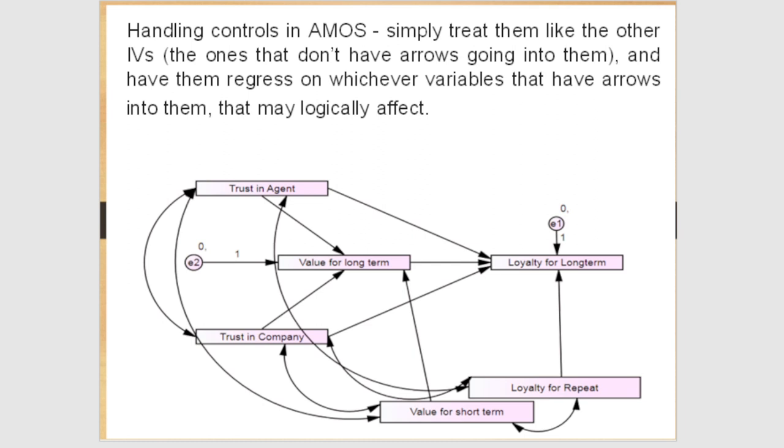In this case, you can see that trust in agent and trust in company are acting as independent variables, whereas loyalty for repeat will act as a control for loyalty for long term, and value for short term will act as a control for value for long term.